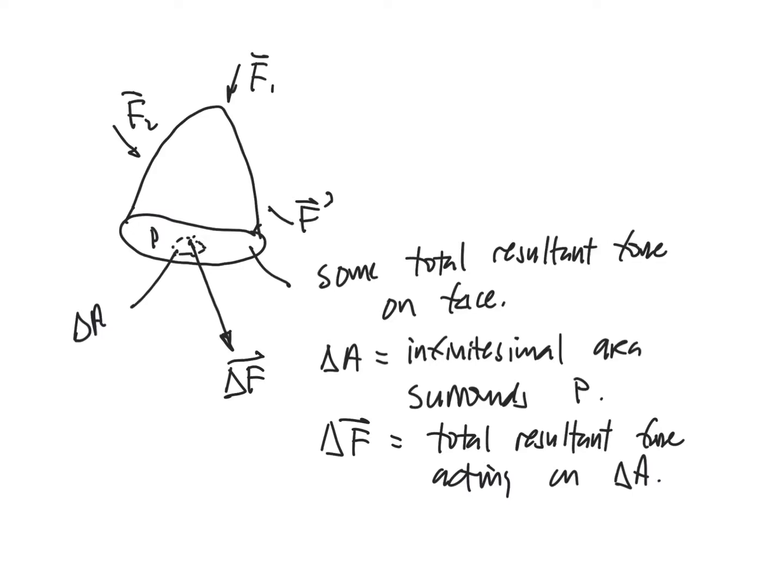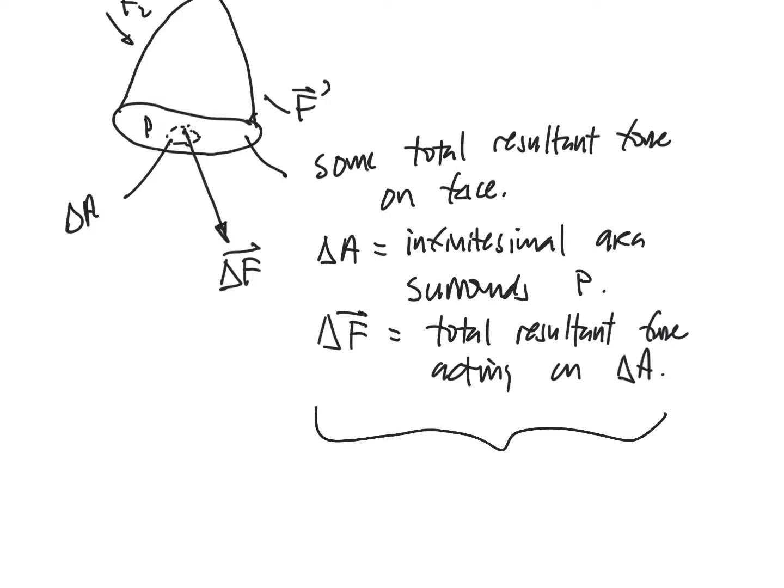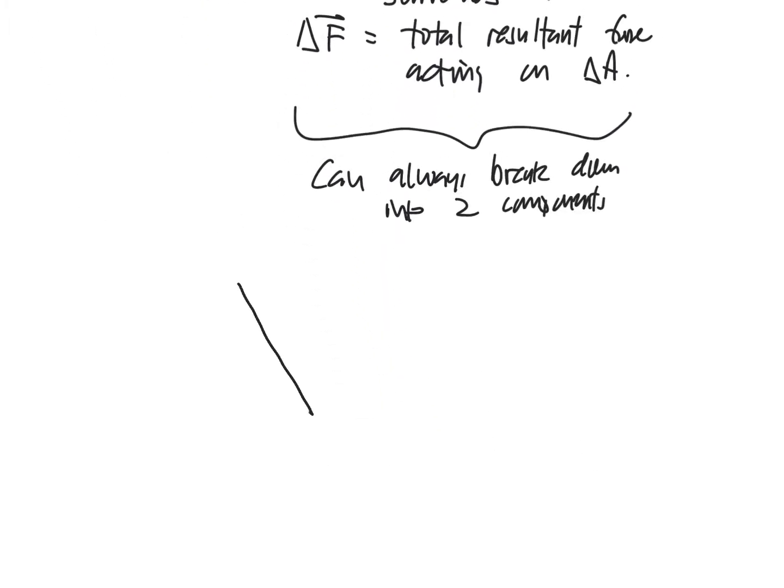The next thing that we're going to do is, regardless of the direction of delta F, we can always break it down into two components. So this we can always break down into two components. One of them is going to be perpendicular to delta A. I'm going to draw that like this, like so. It's coming straight out of the face, so it is perpendicular. And then the other one is parallel to delta A. I'm going to draw that one like this.